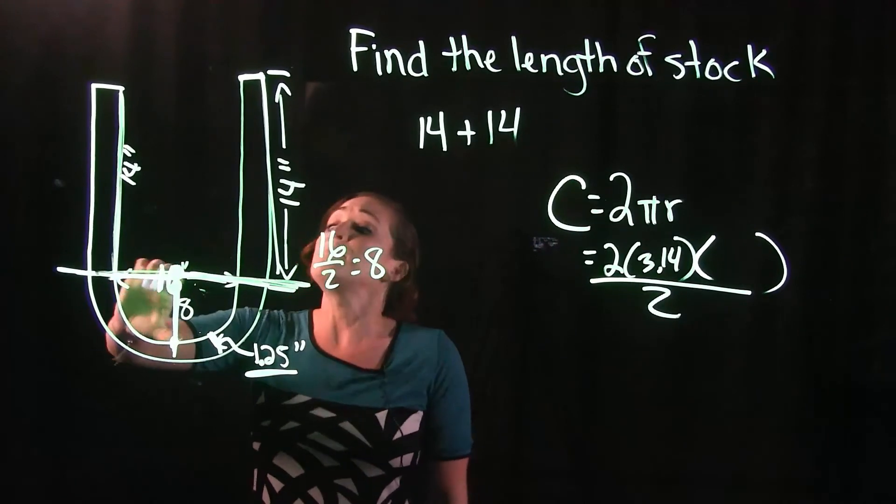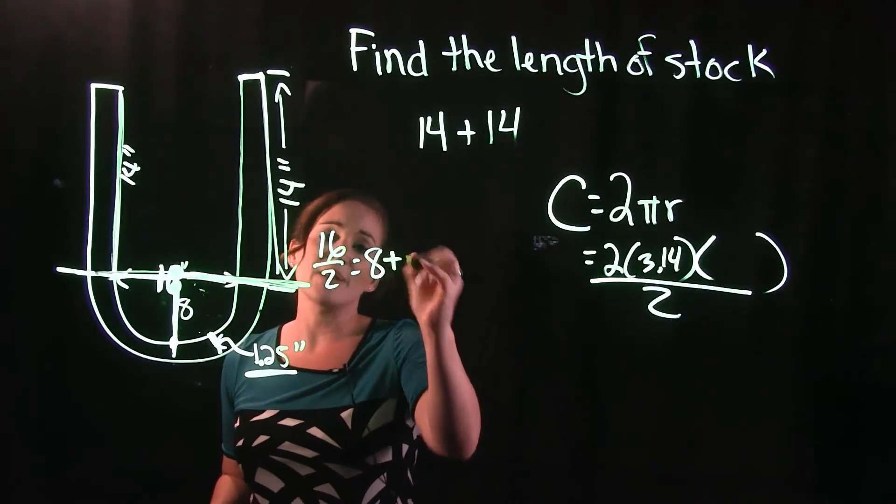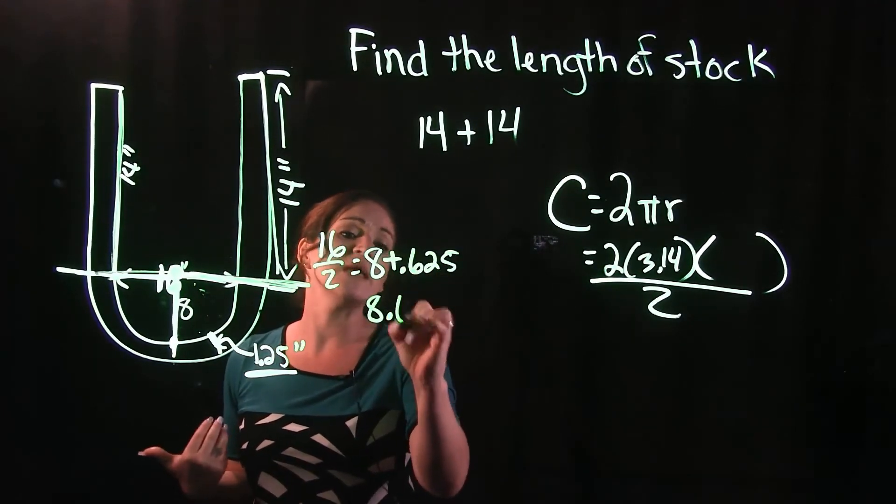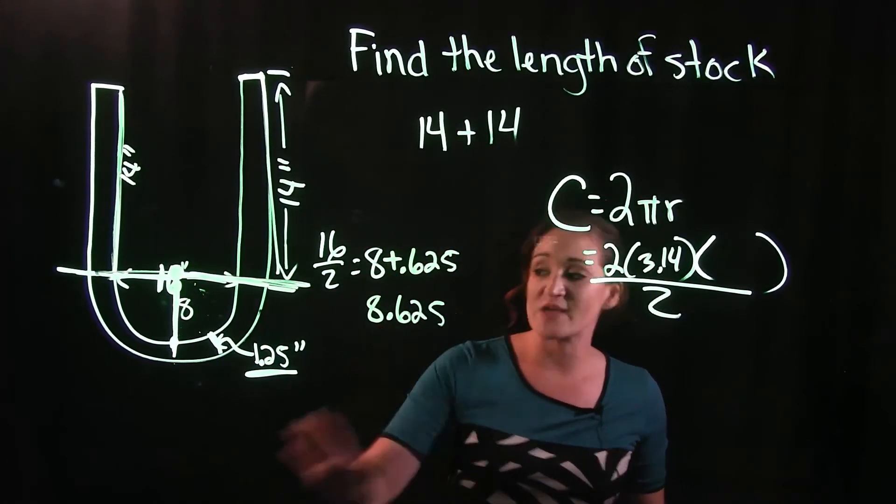So we're going to take the radius plus half the thickness. The radius is 8 plus half the thickness, which is 0.625. So our radius that we want to use is going to be 8.625. That's how you factor in that when it comes to the length of the stock.